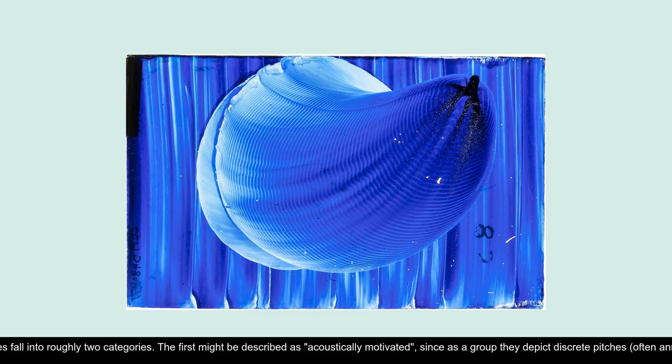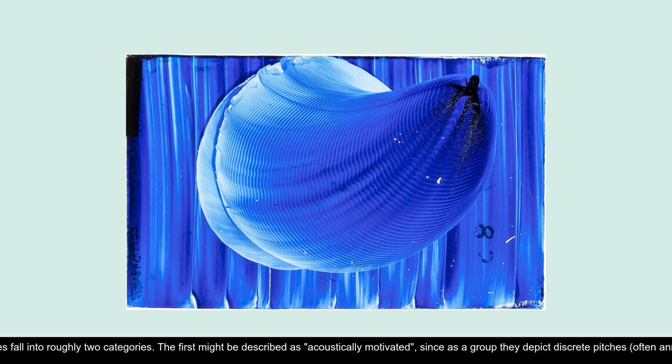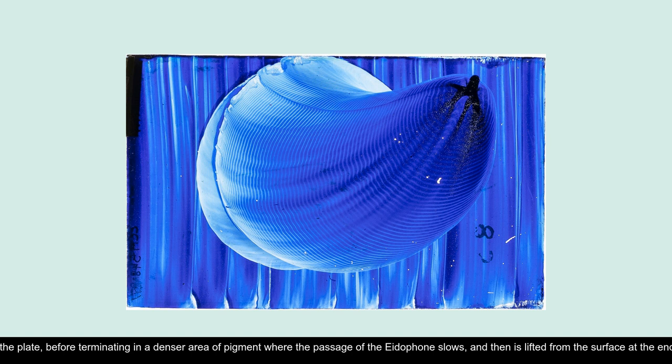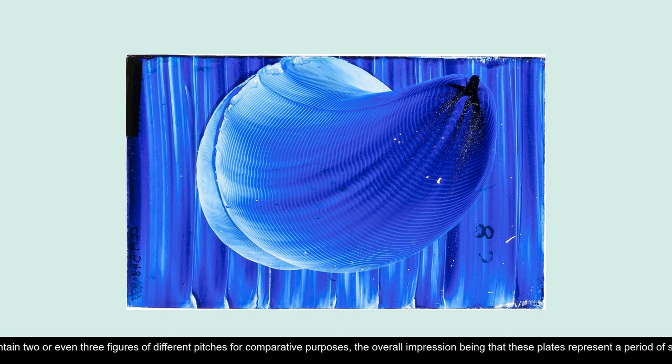These figures fall into roughly two categories. The first might be described as acoustically motivated, since as a group they depict discrete pitches, often annotated with musical notes, are all fairly small, and are a uniform blue in color. These blue figures appear to show a single gesture of instrument and voice, with striations sweeping across the surface of the plate before terminating in a denser area of pigment where the passage of the eidophone slows and then is lifted from the surface at the end of its journey. Several contain two or even three figures of different pitches for comparative purposes, the overall impression being that these plates represent a period of scientifically-inspired research.